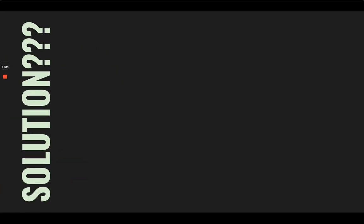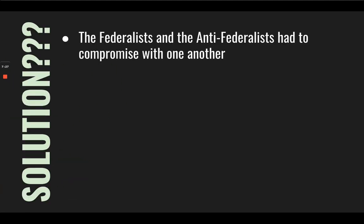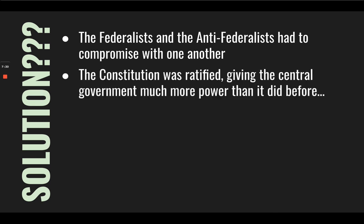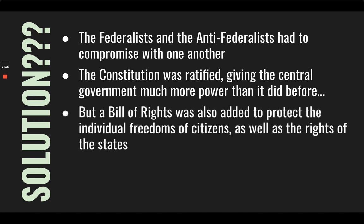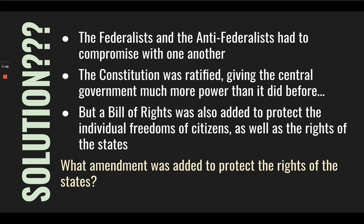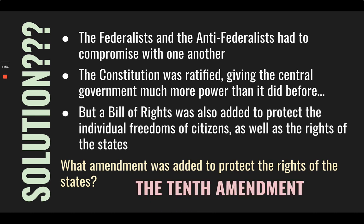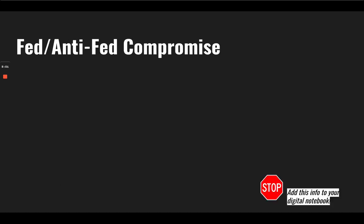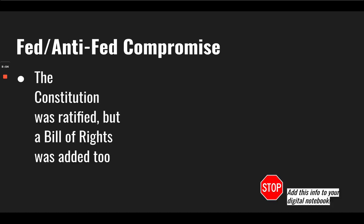The solution: the Federalists and the Anti-Federalists had to compromise with one another. The Constitution was ratified, giving the central government much more power than it had before. But a Bill of Rights was added to protect the individual freedoms of citizens, as well as the rights of the states. The 10th Amendment is the amendment that was added to protect the rights of the states.